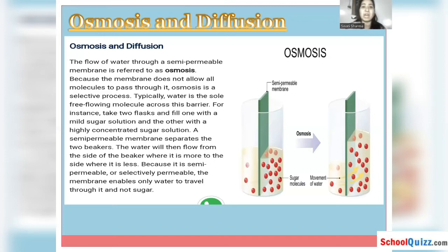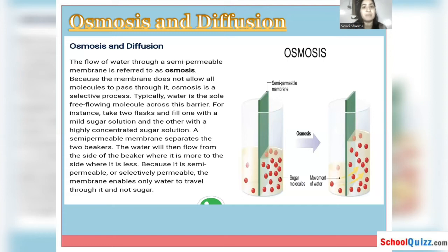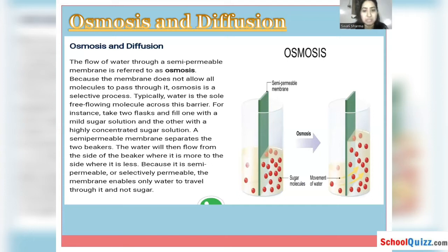Now we should know what solute, solution, and solvent are. The solute is the substance present in lesser amount in the solution, whereas the solvent is the substance present in higher amount. When solute and solvent combine together they form a solution. In the process of osmosis, we see the movement of water from the low concentration side to the higher concentration side with the help of a semi-permeable membrane — that is how the process of osmosis takes place.